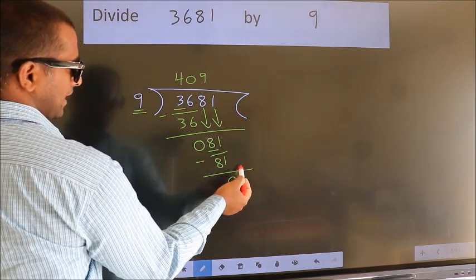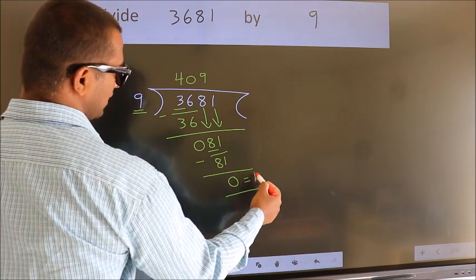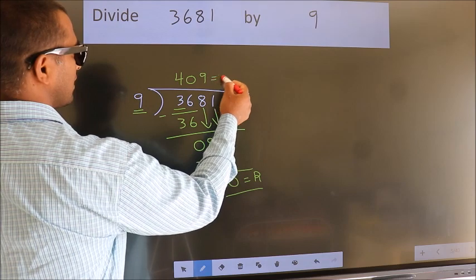No more numbers to bring down. So we stop here. This is our remainder. This is our quotient.